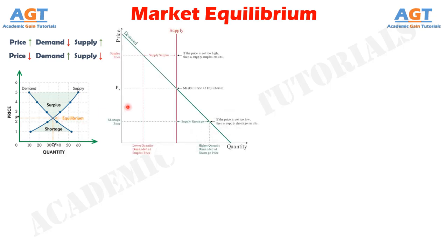Economic theory suggests that in a free market there will be a single price which brings demand and supply into balance, called the equilibrium price. Generally, an oversupply of goods or services causes prices to go down, which results in higher demand, while an undersupply or shortage causes prices to go up, resulting in less demand.